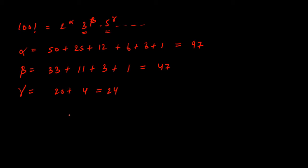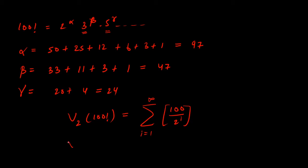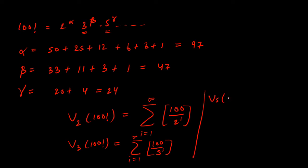The formal notation is: v₂(100!) means the maximum power of 2 divisible by 100 factorial, given by the summation of the floor of 100 divided by 2^i, where i varies from 1 to infinity. Similarly, v₃(100!) equals summation of floor of 100 divided by 3^i, i from 1 to infinity. And v₅(100!) equals summation of floor of 100 divided by 5^i, i from 1 to infinity. This is Legendre's formula.